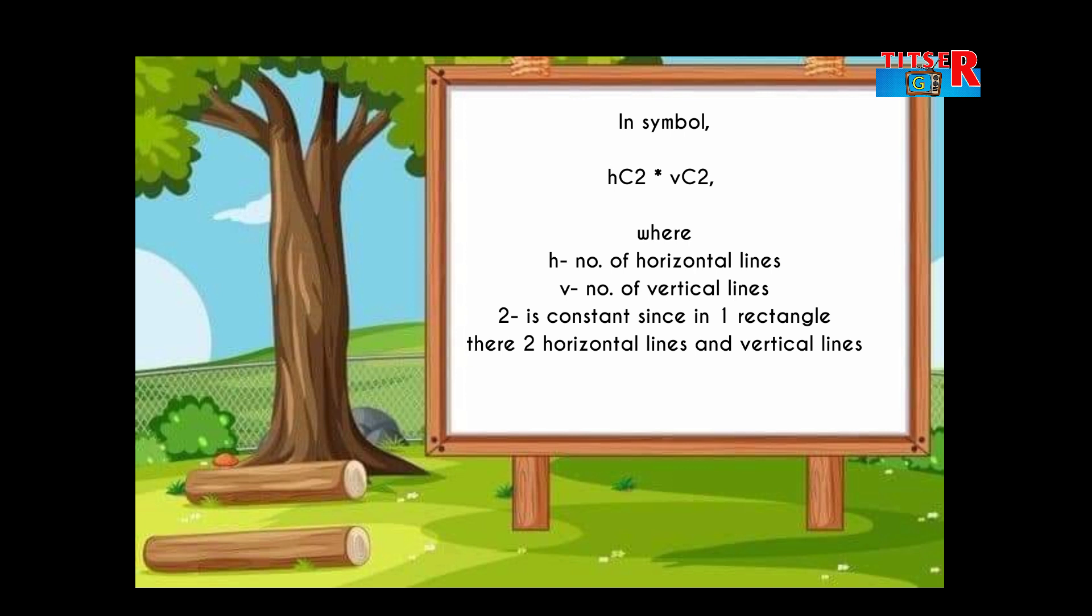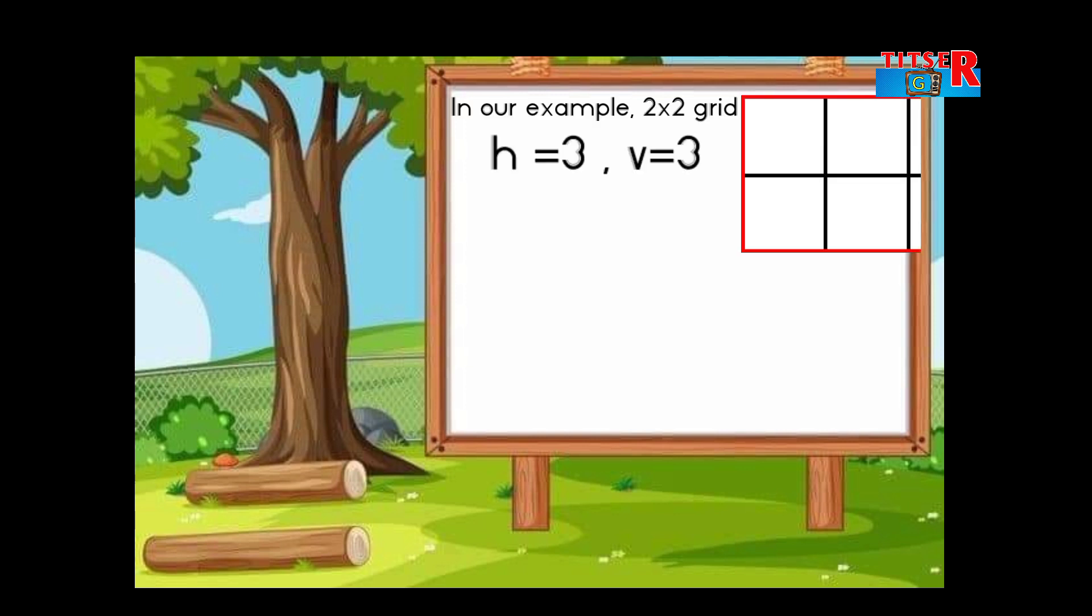Where H is the number of horizontal lines, V is the number of vertical lines. Two is constant since in one rectangle there are two horizontal lines and two vertical lines. In our example, a 2×2 grid, H equals three, V equals three.